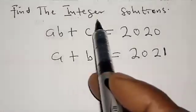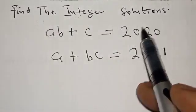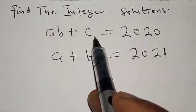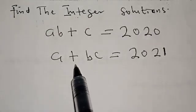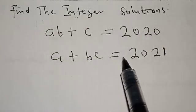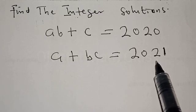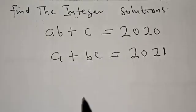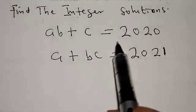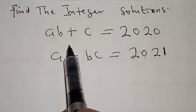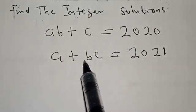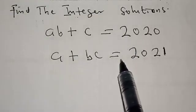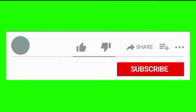Find the integer solutions. AB plus C is equal to 2020, and A plus BC is equal to 2021. Hi everyone, welcome to my class. In this class, we want to find the integer solutions from this given equation: AB plus C equals 2020, and A plus BC equals 2021.